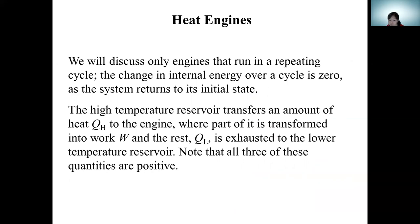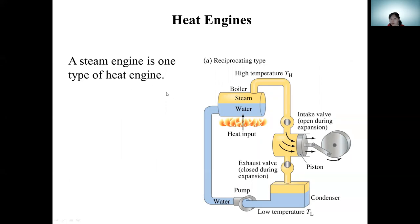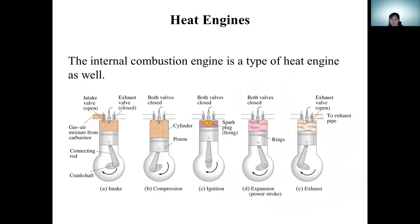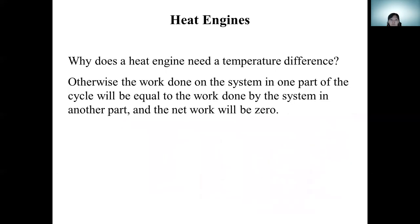Note that all three of these quantities are positive. A steam engine is one type of heat engine — this is the boiler, this is the low-temperature part, this is a piston. Heat is given to the piston, part is given to the low temperature, and the piston does the work. The internal combustion engine is also a type of heat engine. A heat engine requires a temperature difference; otherwise the work done on the system in one part of the cycle equals the work done by the system in another part, and the net work will be zero.